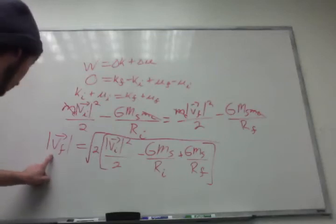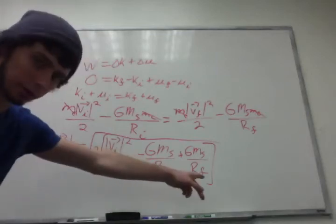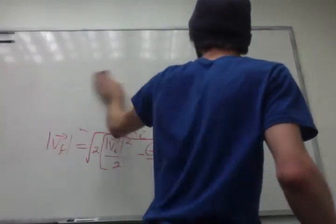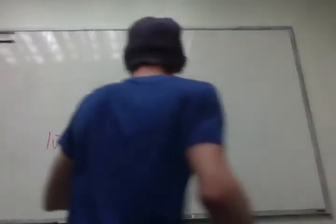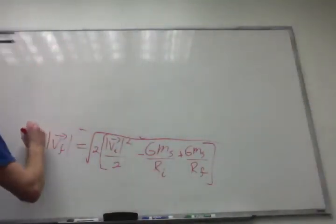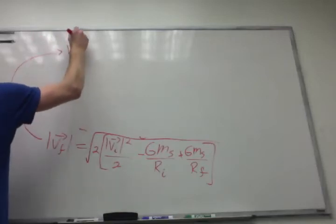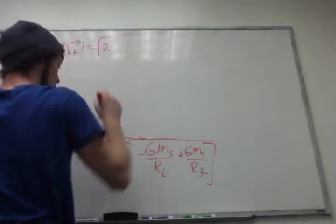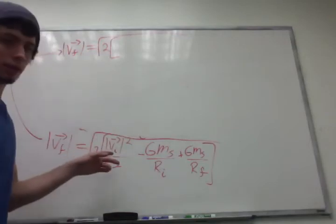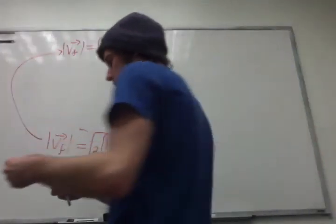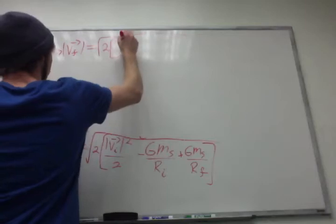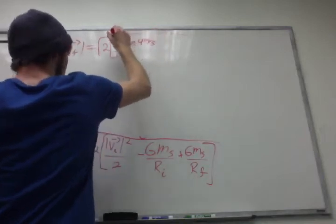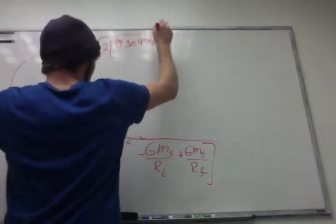So now we know final velocity equals the rest of this stuff once we plug in values. Equals the square root of 2, of the initial velocity which is defined to be 1.3×10^4 meters per second. That's going to be squared over 2.